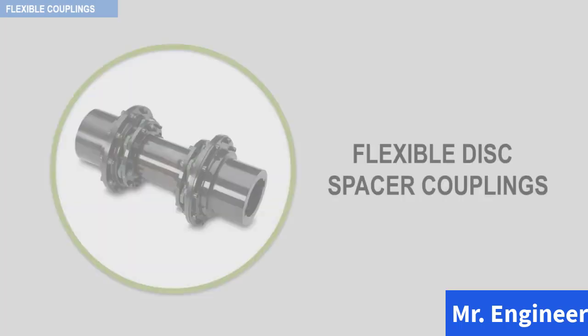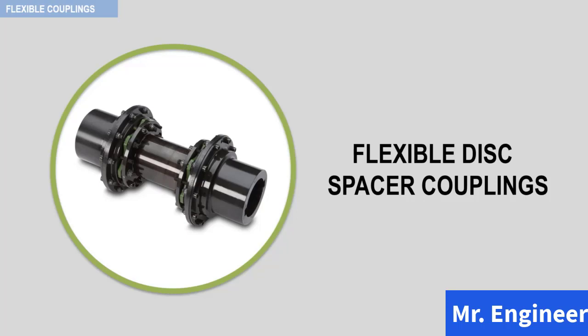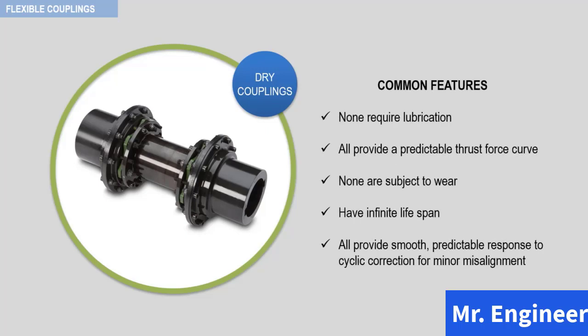Flexible membrane and flexible disc couplings do not have moving parts and derive their flexibility from controlled flexure of specially designed diaphragms or disks. They do not require lubrication and are commonly known as dry couplings. The diaphragms or disks transmit torque from one shaft to the other, just as the gear meshes do in a gear coupling. Common features include: no lubrication required, a predictable thrust force curve for a given axial displacement range, and when properly applied, operated, and maintained, none are subject to wear and have an infinite lifespan.